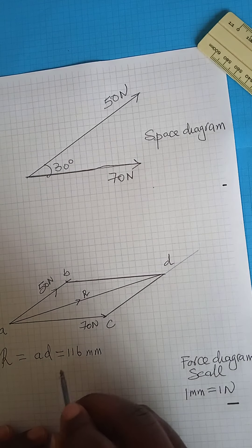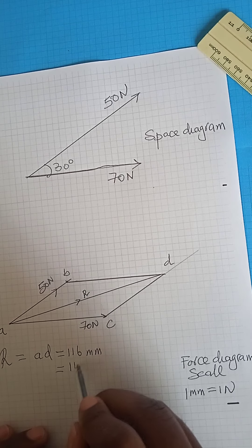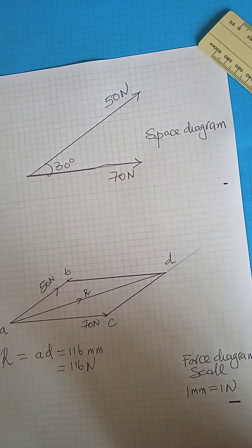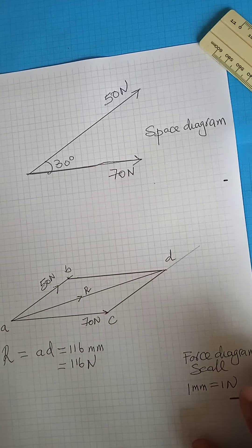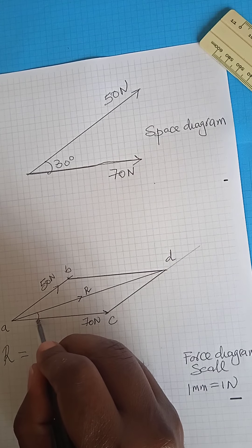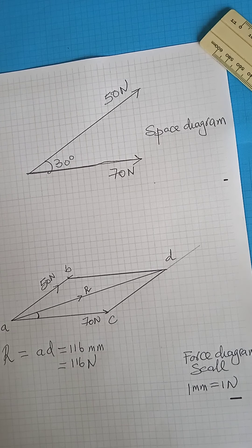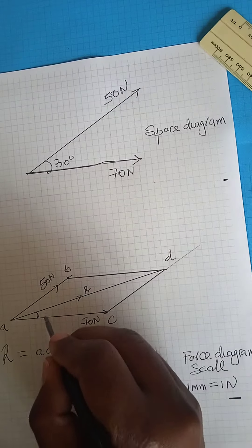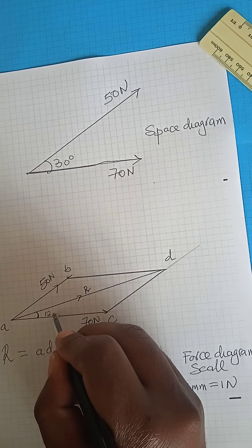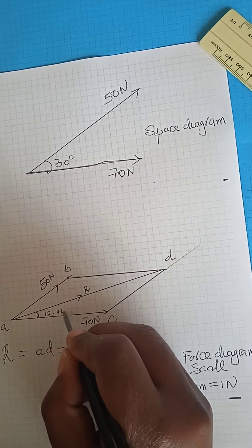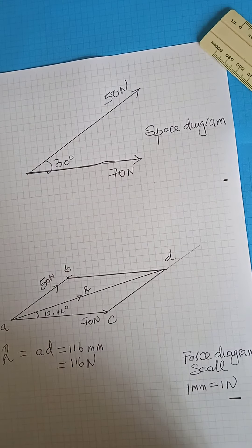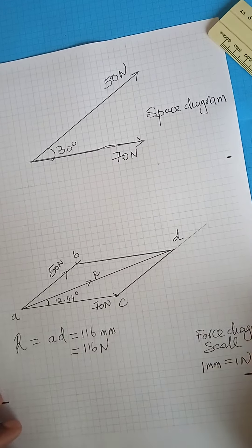You then also are required to measure this angle. So if you use your protractor, you realize that angle will be 12.44 degrees.